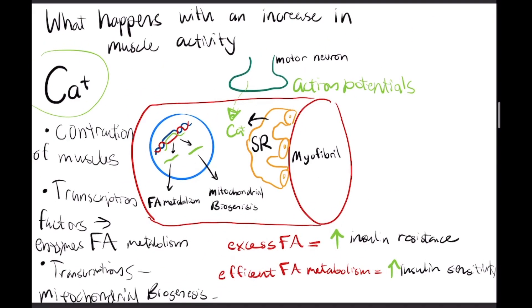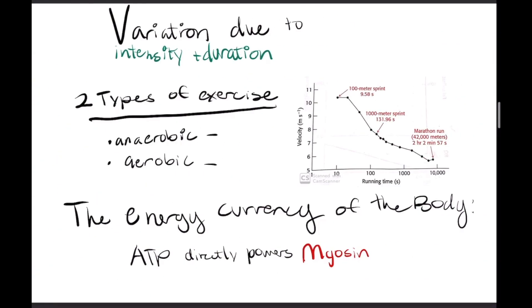Why is that important? The coupling of these two things actually leads to more efficient fatty acid metabolism. As we can see, excess fatty acids increase insulin resistance, whereas efficient fatty acid metabolism increases insulin sensitivity. That's why it's important to be able to metabolize fatty acids efficiently, because it increases our insulin sensitivity. So you should be able to answer the question: what happens with an increase in muscle activity.